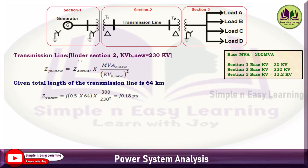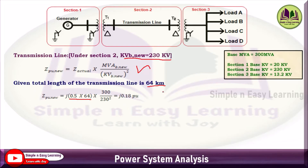The transmission line is in Section 2, so use base kV = 230 kV. The impedance is given in ohms: 0.5 ohms/km × 64 km. Since the impedance is in ohms, use: Z_pu = Z_actual × MVA_base / (kV_base)². Substituting: 0.5 × 64 × 300 / (230)² = j0.18 pu.